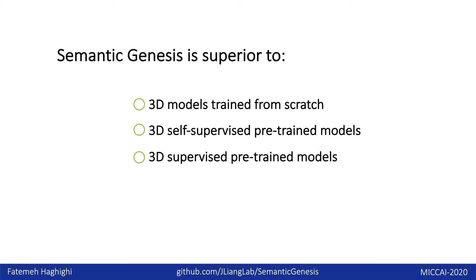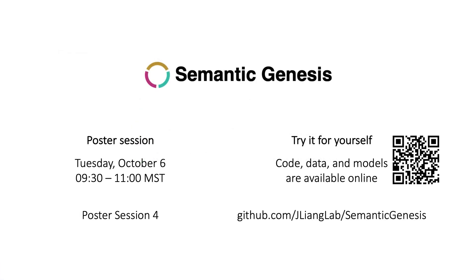Based on our extensive experiments, we envision that semantic genesis can serve as the primary source of transfer learning in 3D medical imaging, because it outperforms 3D models trained from scratch, 3D models pre-trained by self-supervision, and 3D models pre-trained by full supervision. For more information, please join us for the poster session. Thank you.